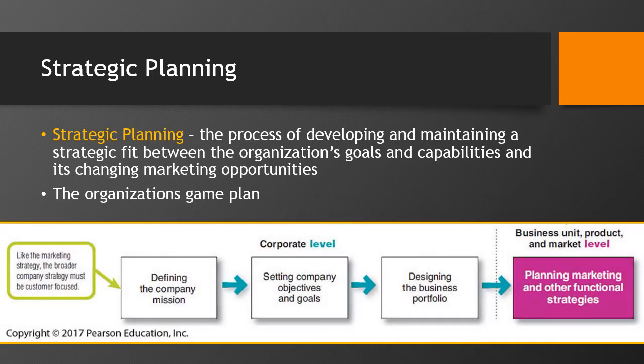Let's take a look at this figure illustrating the steps in strategic planning. At the corporate level, the company starts a strategic planning process by defining its overall purpose — its mission. The mission turns into detailed, supportive objectives that guide the entire company. Then headquarters decides what portfolio of businesses and products is best for the company, and how to support each one.